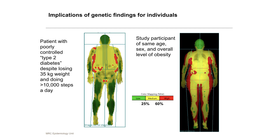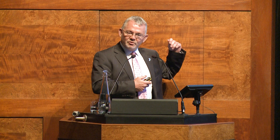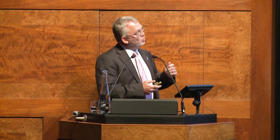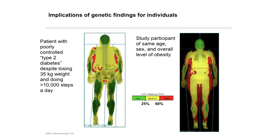This has clinical and public health implications. A patient I saw with poorly controlled type 2 diabetes — despite really working very hard, losing 35 kilograms and doing 10,000 steps a day — illustrates this. Her DEXA scan, compared to a person of the same age, sex, and overall adiposity, shows fat deposited in the legs and subcutaneously in the comparison person, while she virtually has none in her legs. She has an inability to store fat safely, which then overspills into the viscera and gives rise to her poorly controlled diabetes.